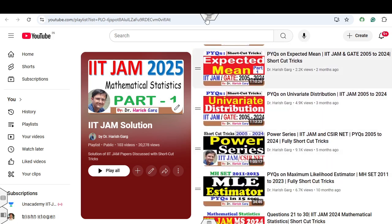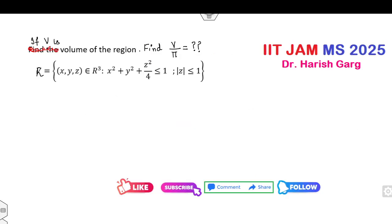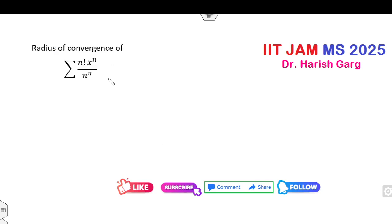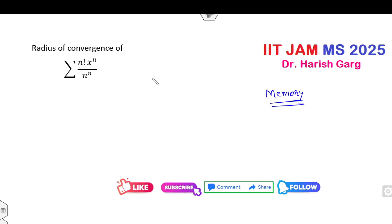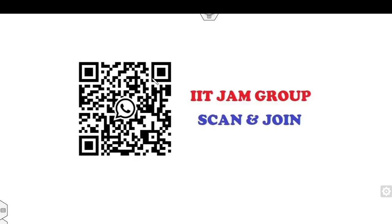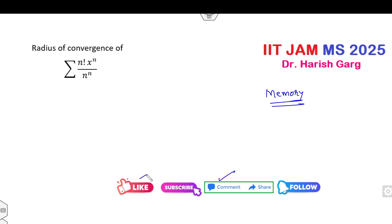You must watch this playlist and learn many shortcut tricks. In this lecture I will explain two different questions: one related to volume and the second related to radius of convergence. These are memory based questions, so the statements I received from students are what I've put in this video. If any statements are wrong or missing, provide the correct statement in the comment box and I'll upload the next solution accordingly. If you are new, you can scan and join my WhatsApp group. Please like and comment on this video.